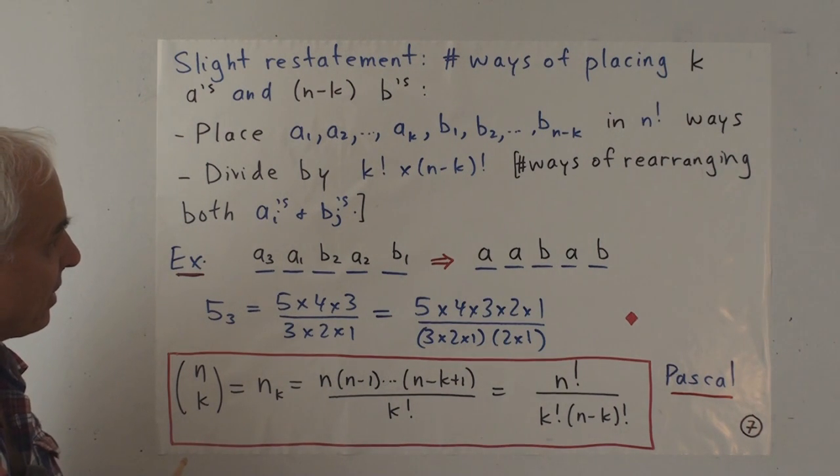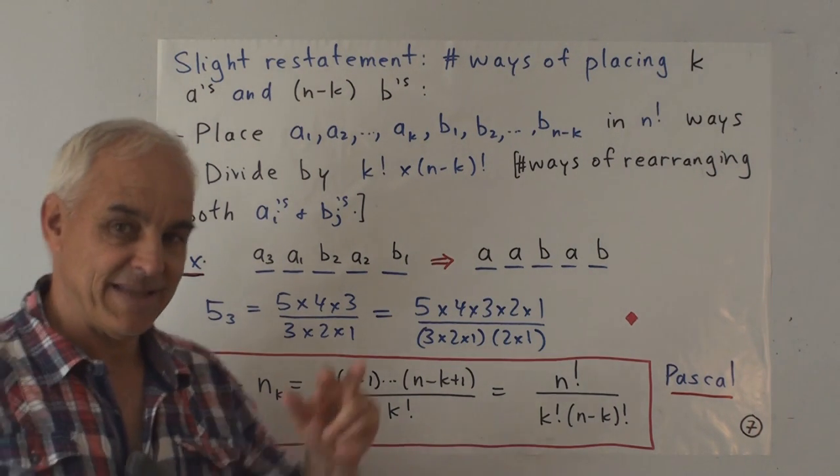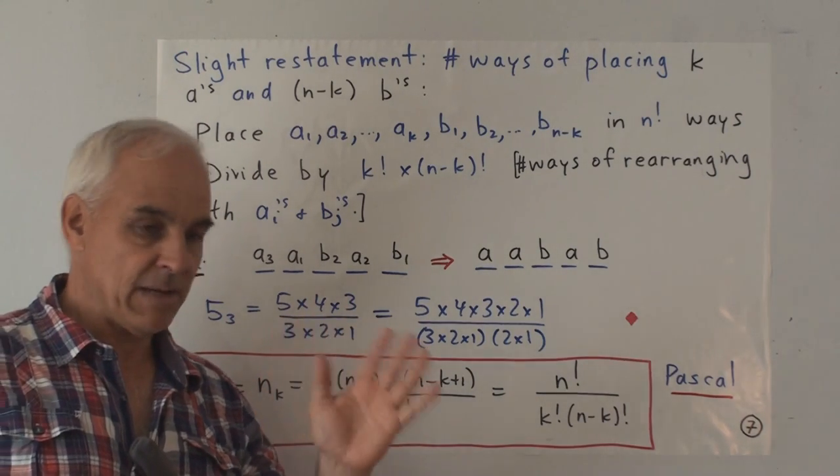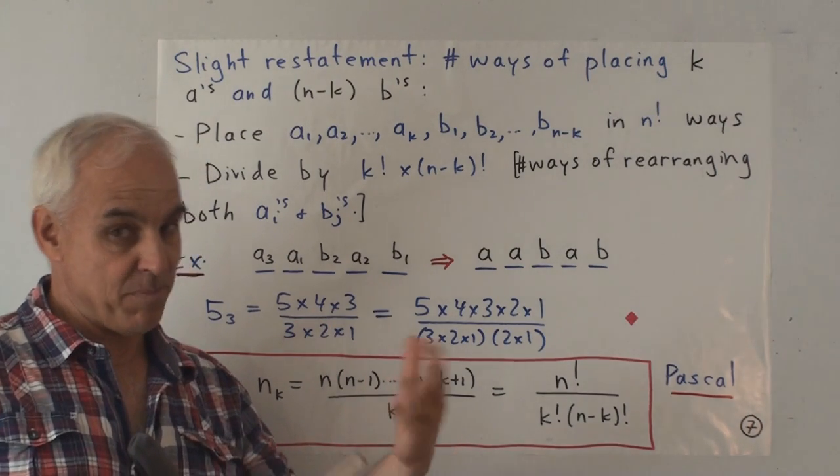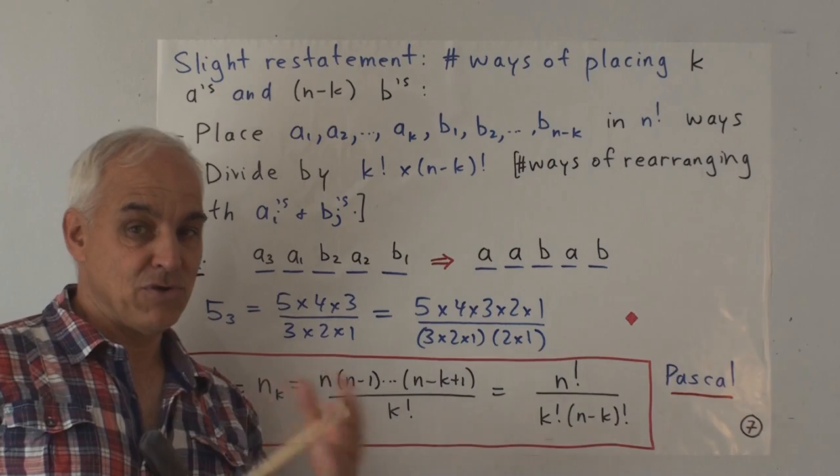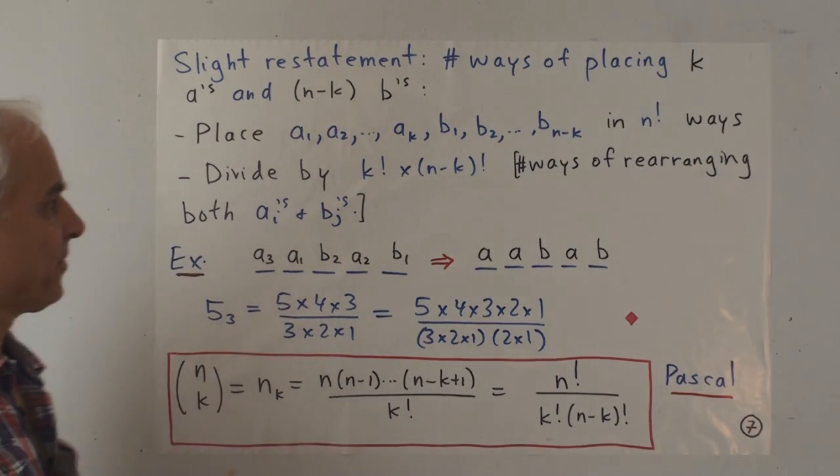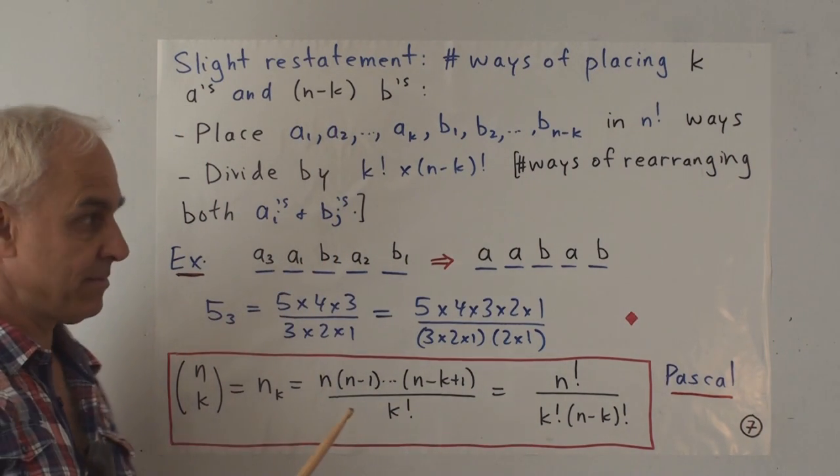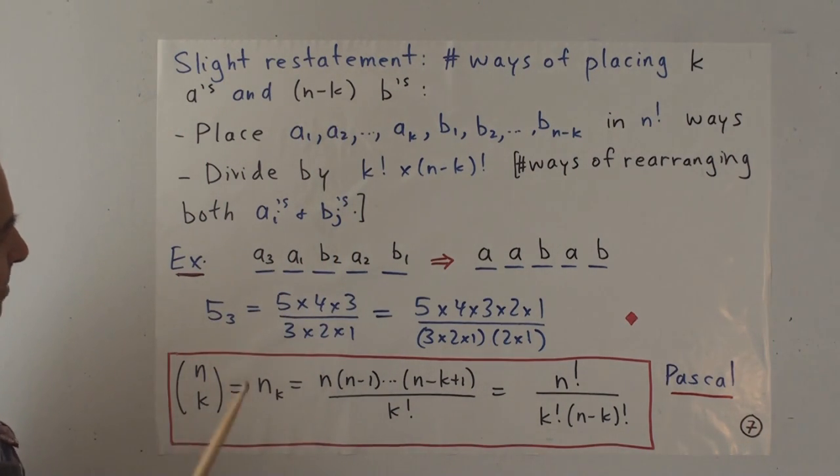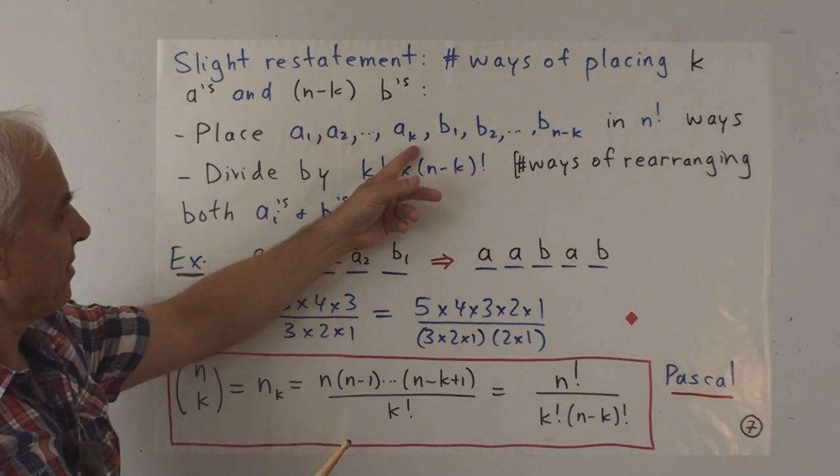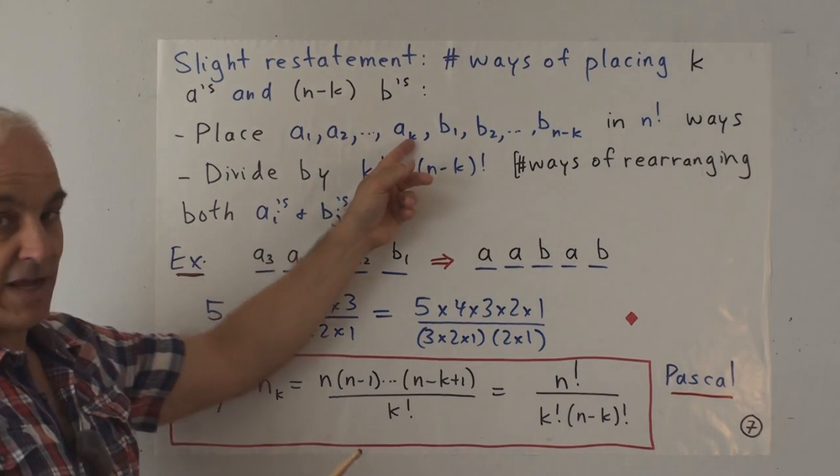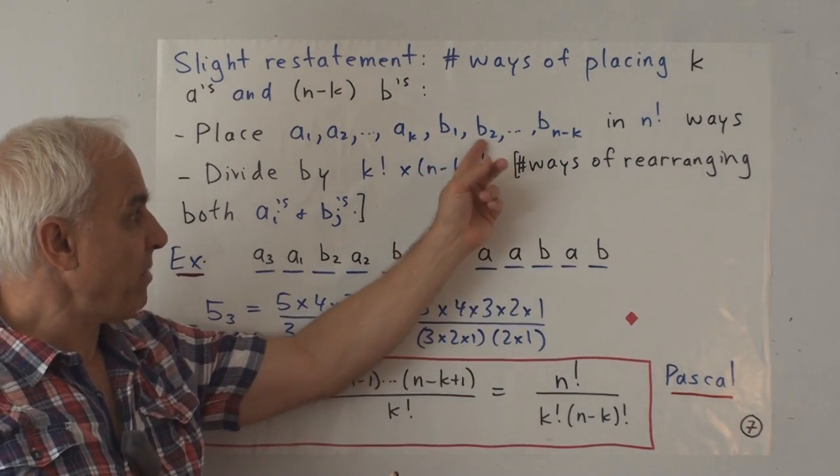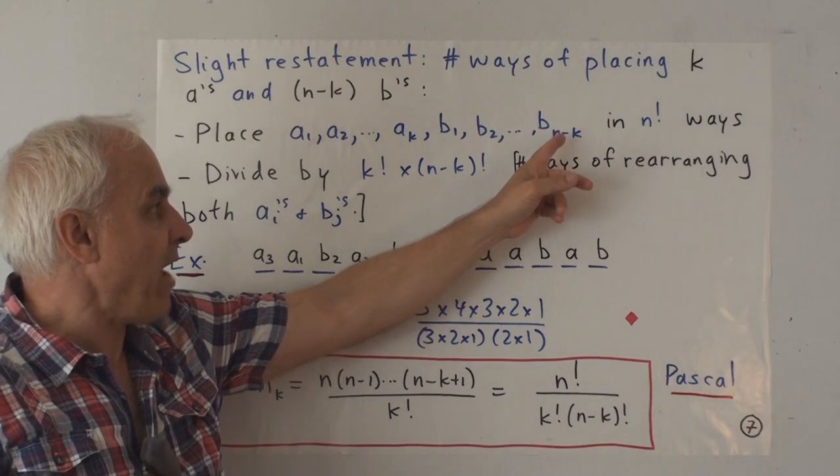There's a slight reformulation of it that I think is useful that I want to show you. That's when we focus not just on the ways of placing the a's but include the b's as well. Now that may seem redundant because once we know where the a's go, then the b's are automatic. But you'll see in a minute why that's a useful restatement of things. So the number of ways of placing k a's and n minus k b's.